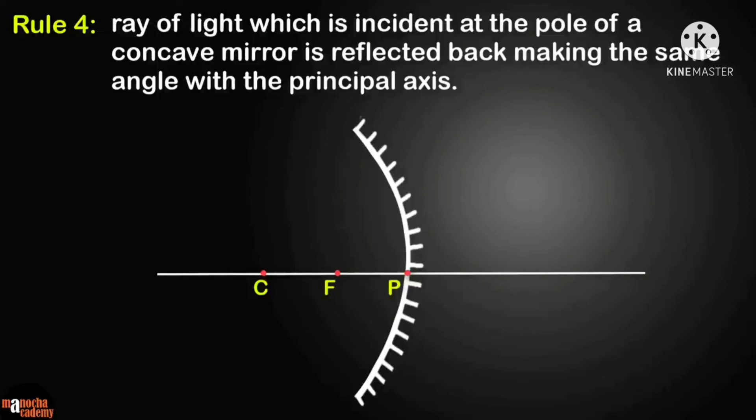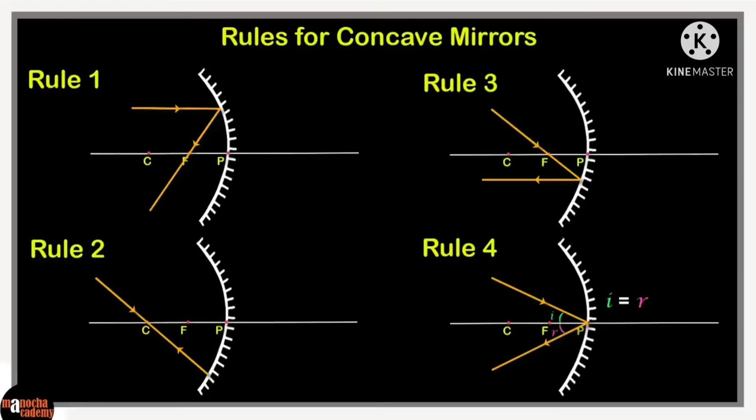Rule 4: a ray of light which is incident at the pole of a concave mirror is reflected back making the same angle with the principal axis. It looks like a plane mirror ray diagram because the principal axis is like the normal here, and the angle of incidence equals the angle of reflection. Please see the concept board.